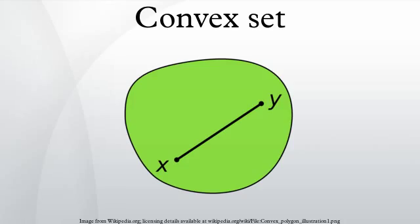Some examples of convex subsets of the Euclidean plane are solid regular polygons, solid triangles, and intersections of solid triangles.